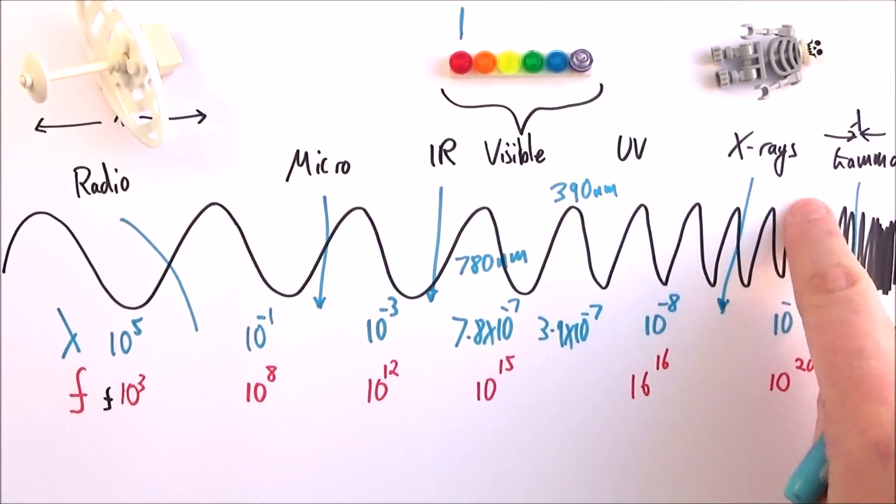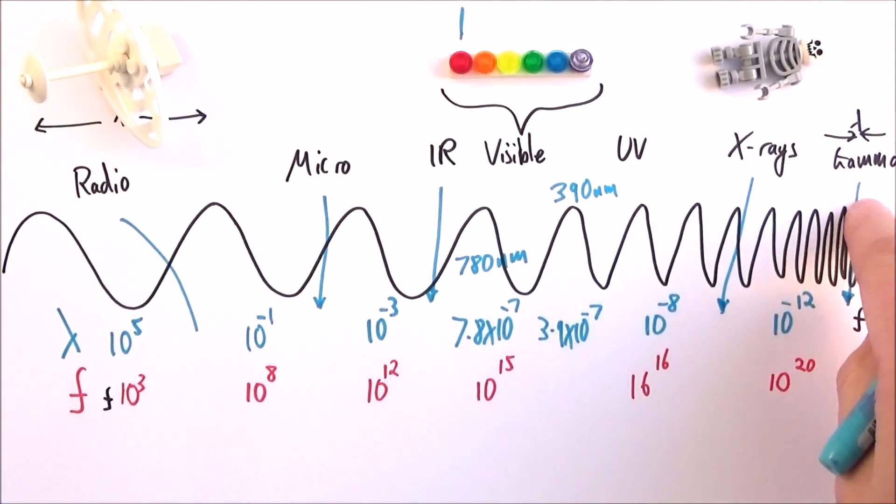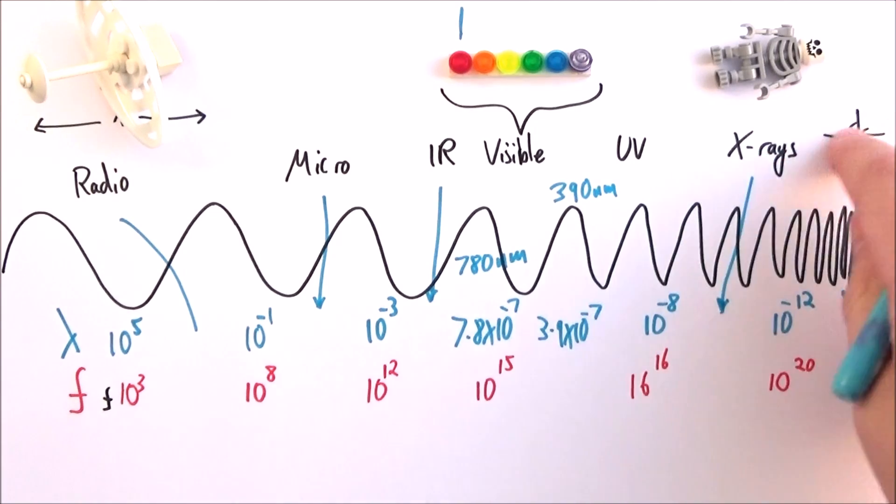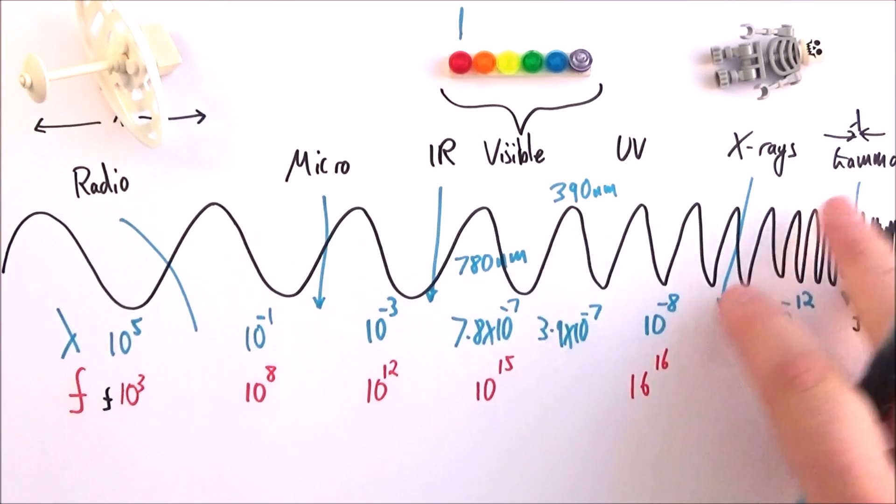And then we have the gamma radiation, which is anything shorter than 10 to the minus 12. And there's not a distinct point where x-rays finish and gamma rays start. And sometimes we can look at their definitions in terms of x-rays being generated by the energy given off when electrons decelerate, whereas a gamma ray is something that's emitted by the nucleus of an atom. And there's a bit of a crossover here, but we'll worry about that later.